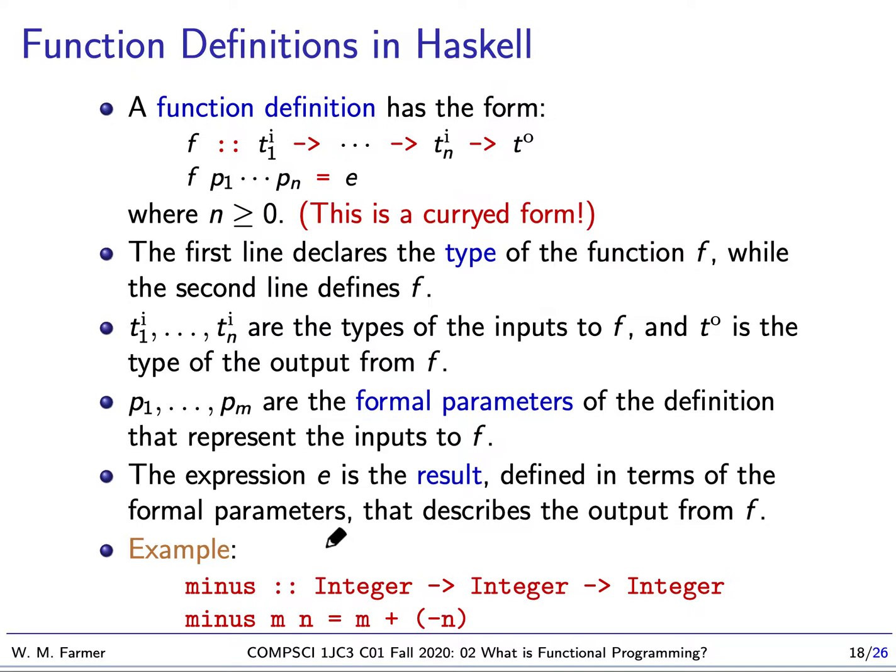Let's look at a simple example - a function called minus. Minus takes an integer as an input, returns a function that takes an integer as an input, and then finally returns an integer. If we feed it both inputs right away, we can define the result as m plus the negation of n. The important thing is it looks like a regular function that takes two arguments, but actually it's a function that takes one argument and returns a function that takes another argument.